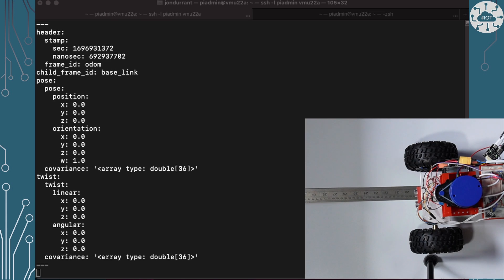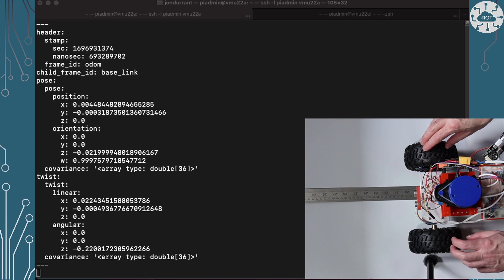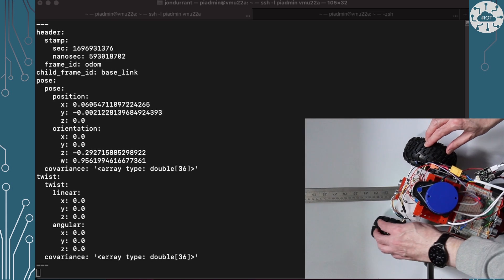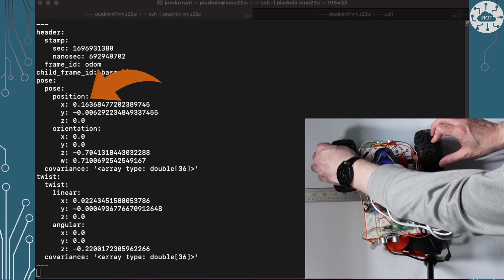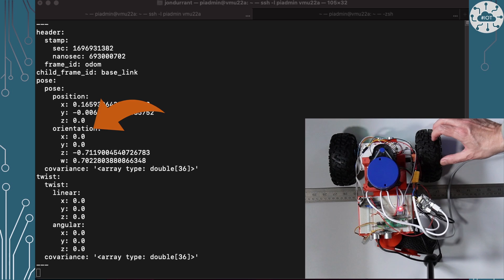If I reset Odometry and then drag DDD through 90 degrees, so only turning one wheel, we can see that the X again moves as the position on the X axis moves, but we also get a rotation.